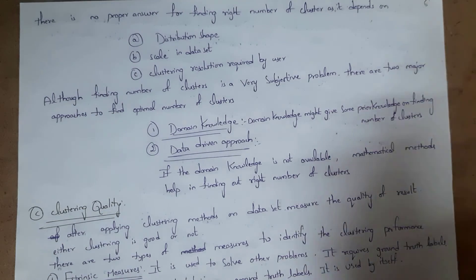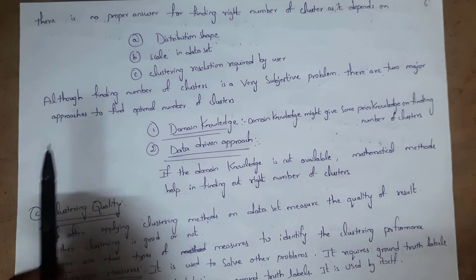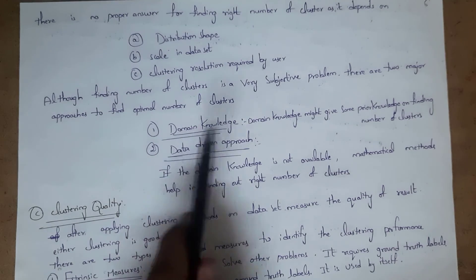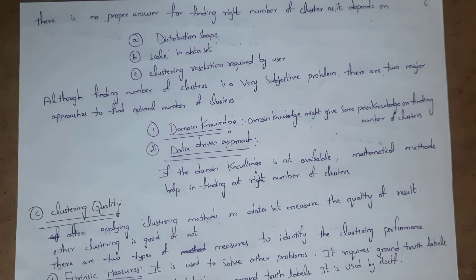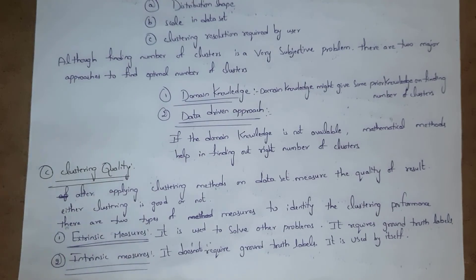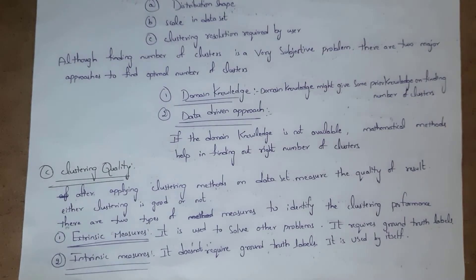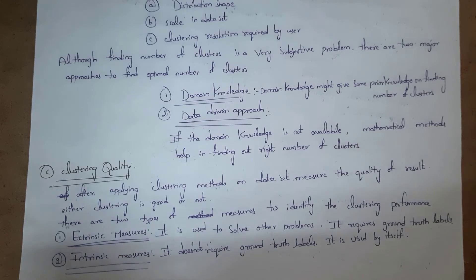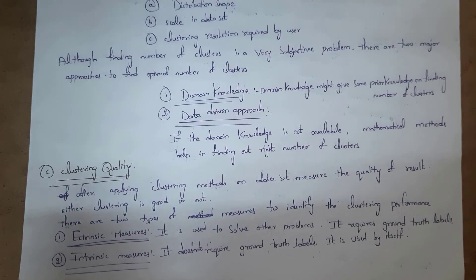Finding the optimal number of clusters is very complicated, but there are two major approaches: the first one is domain knowledge, and the second one is a data-driven approach. Domain knowledge may help in finding the optimal number of clusters, but if domain knowledge is not available, then we use mathematical methods to find the right number of clusters.